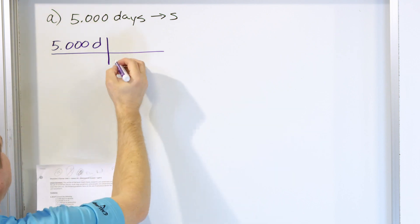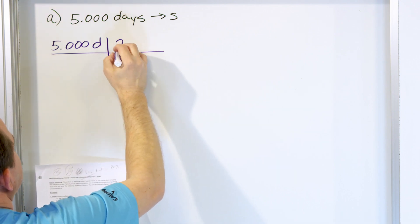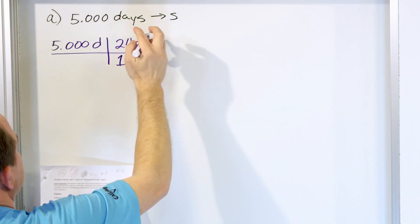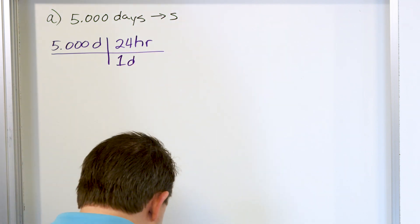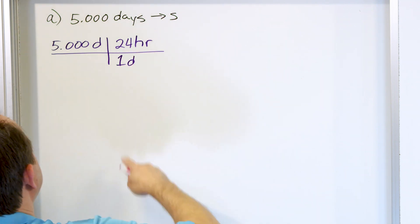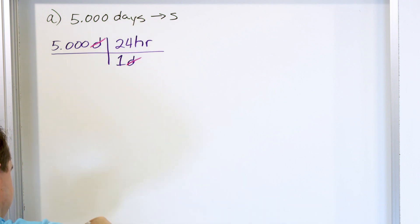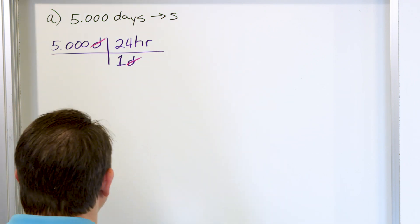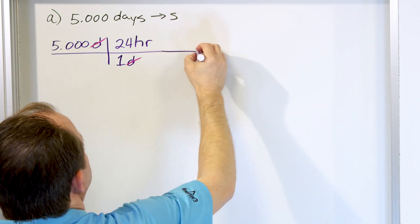I do know that one day has 24 hours in it. I write it like this because the days on the top and the bottom cancel. If I stop the calculation now, I have hours.